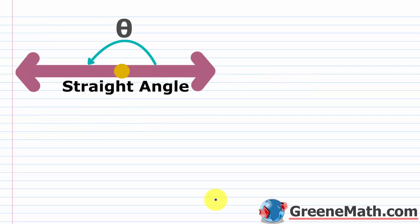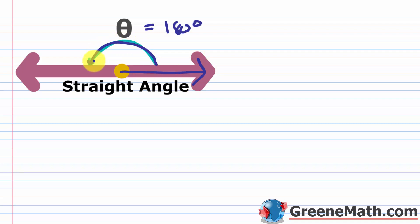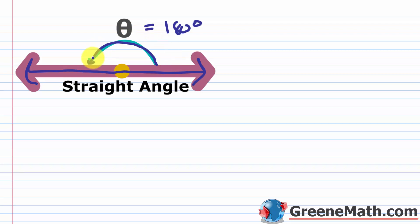For a straight angle, theta is 180 degrees. You can imagine starting with two rays on top of each other and making half of a complete rotation — the terminal ray ends up pointing the opposite direction, so it looks like a straight line. Since a complete rotation is 360 degrees, half of that is 180 degrees. That's why theta is 180 degrees for a straight angle.